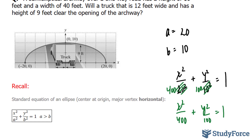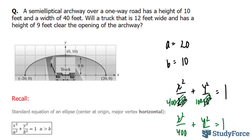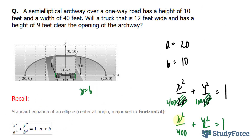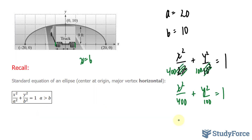Now we want to know: will the truck that is 12 feet wide and has a height of 9 feet clear the opening of the archway? The distance from side to side is 12 feet, so I'll substitute x equals 6 into the equation and solve for y to see if the value of y is greater or less than 9. If it's greater than 9, the truck can pass through; if it's less than 9, it won't.